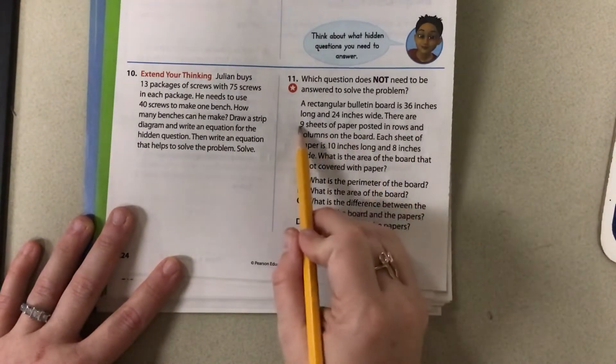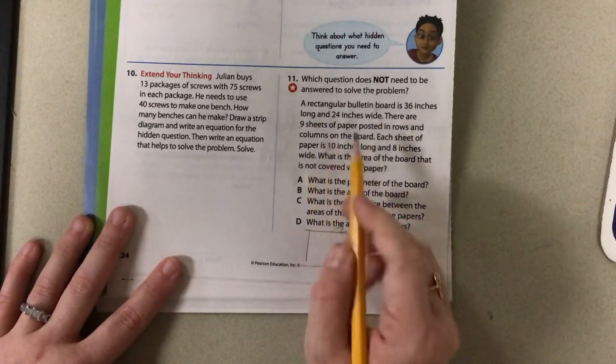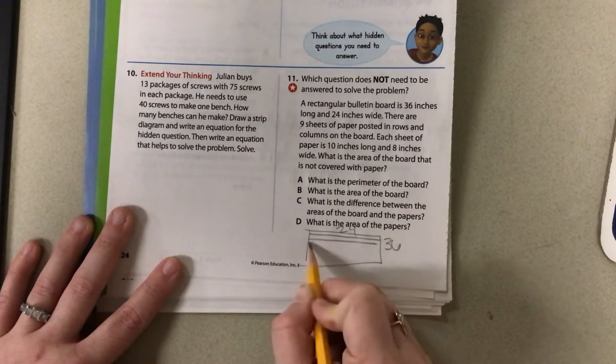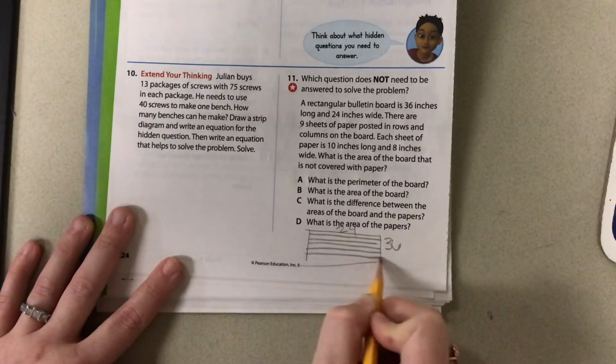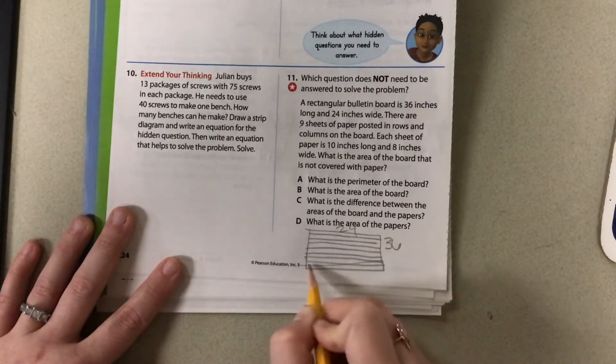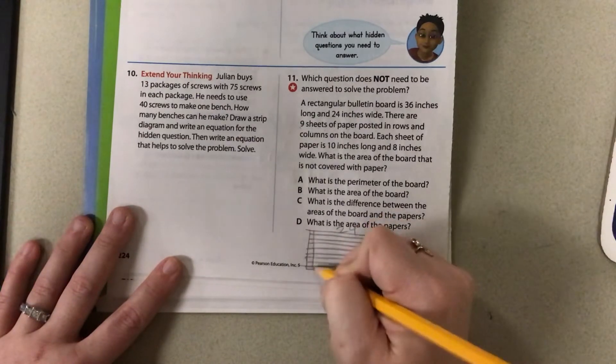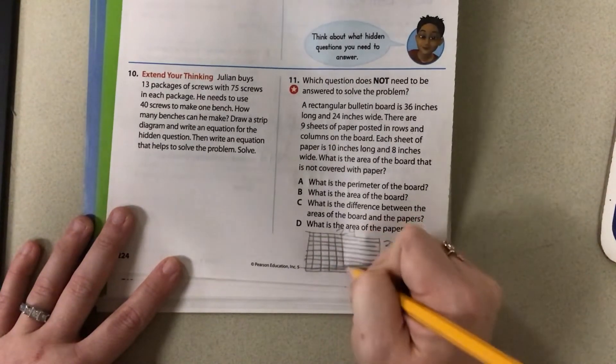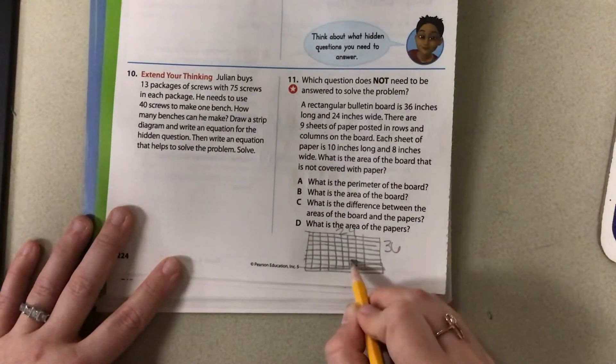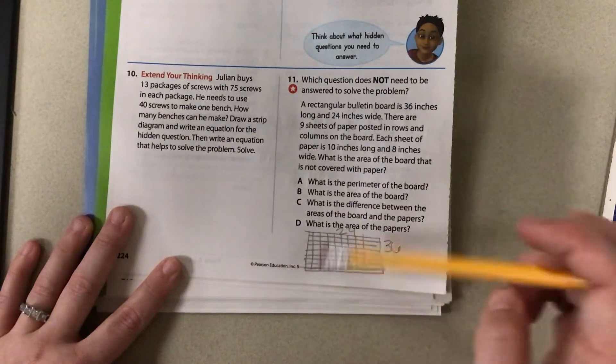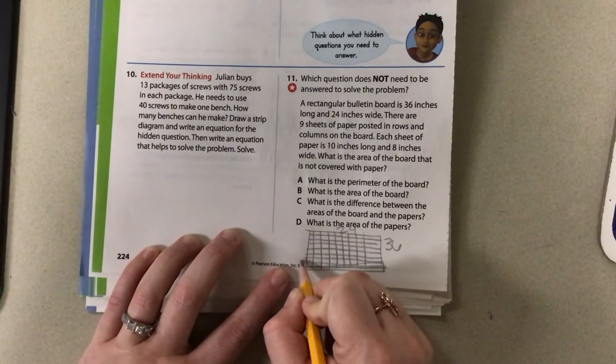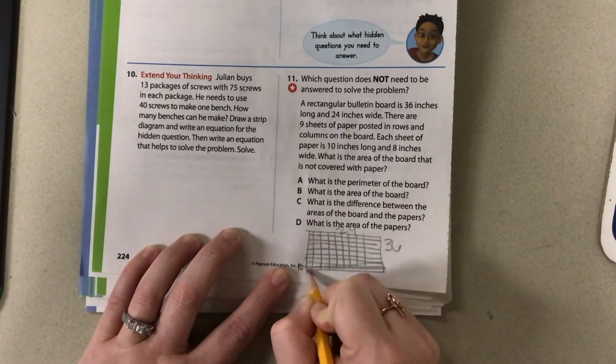Then there are 9 sheets of paper posted in rows and columns. So I know I'm going to have 1, 2, 3, 4, 5, 6, 7, 8, 9. And again, 1, 2, 3, 4, 5, 6, 7, 8. 1, 2, 3, 4, 5, 6, 7, 8, 9. Okay, that's 9. It's just a little long there. It's okay. And each of those, I'm going to kind of label it over here to the side, is 10 by 8.